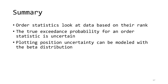In this video, we discussed order statistics and their role in extreme value analysis. Three key points to take away are: order statistics look at data in a dataset based on their rank in that dataset; the true exceedance probability for an order statistic is uncertain; and when we use plotting positions to represent the empirical distribution of our data, the uncertainty in those plotting positions can be modeled with a beta distribution. Thanks, and tune into the next video in this series on extreme value theory to learn about the first extreme value theorem.